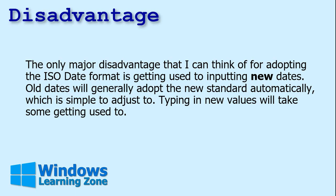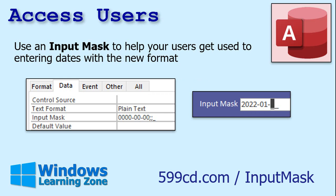Typing in new values is going to take some getting used to. If you're just entering common dates like month and day, you can still type 4/5, but if you're including a year, remember to lead with the year — type 22/4/5 at least; that will work. To help enforce the new date format, set up an input mask on your fields. That way your users have to input data correctly — typing exactly 2022-01-22 or whatever. I have a whole separate video on input masks; you'll find the link below.